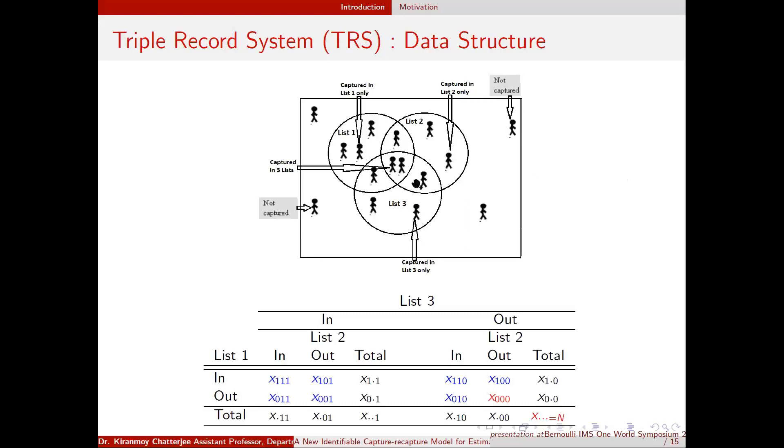So the earlier dual record system structure you can extend. There are persons which are captured by three lists and there are persons which are not captured by any of the three lists. So these people make the capital N unknown. Rest of all blue entries are known. So in triple record system we have total seven known cells and one unknown cell.